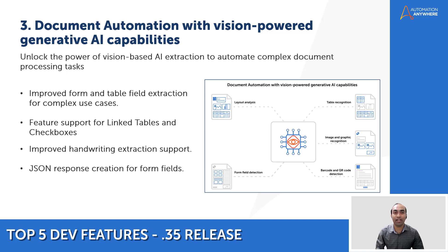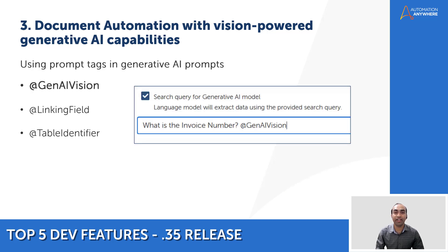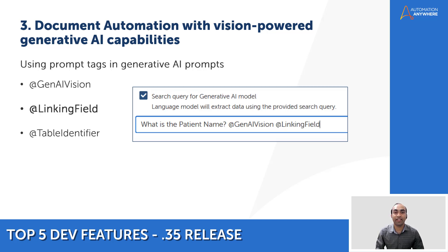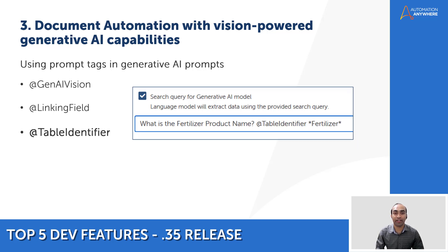Now let's see how to implement these capabilities using prompt tags. First, @genAIVision — this tag tells the document extraction engine to leverage vision-powered generative AI models for data extraction, enhancing accuracy and handling of complex documents. Next is @linkingField — use this tag when you want to link separate detectable tables; it ensures a new column is added to the output file for the linking field. Finally, @tableIdentifier — this tag helps the engine differentiate specific tables by adding it to the end of table fields along with the key heading, table title, or unique column headers.